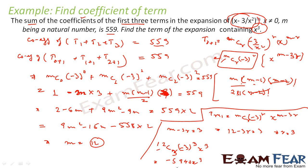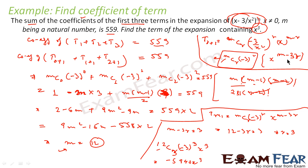To summarize: we were told the coefficient of the first three terms equals 559, so we found the coefficients and solved to get m = 12. Then using T(r+1) = mCr · (-3)^r · x^(m-3r), we set m - 3r = 3, found r = 3, and substituted m and r to get -5940x³.